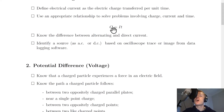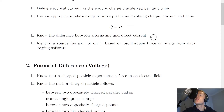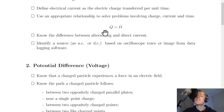Remember the units: charge is measured in coulombs, current in amps or amperes, and time in seconds. You also need to know the difference between alternating and direct current. Direct current is when current flows in one direction only at all times. Alternating current is where the current changes direction every fraction of a second — it goes back and forth. Examples: a battery is a DC source, and the mains supply (plugging something into the wall) is AC.